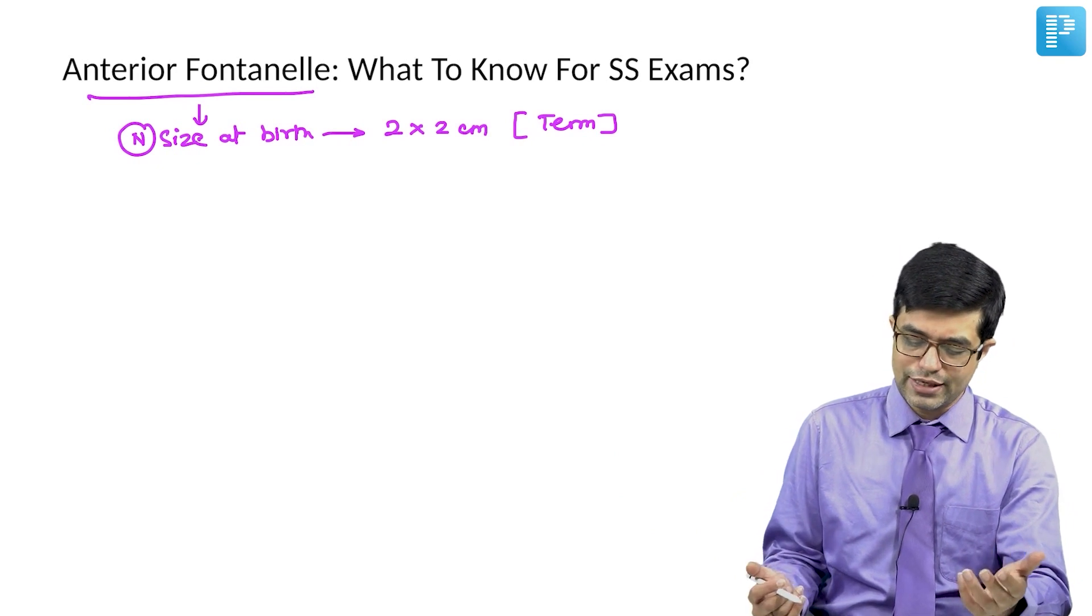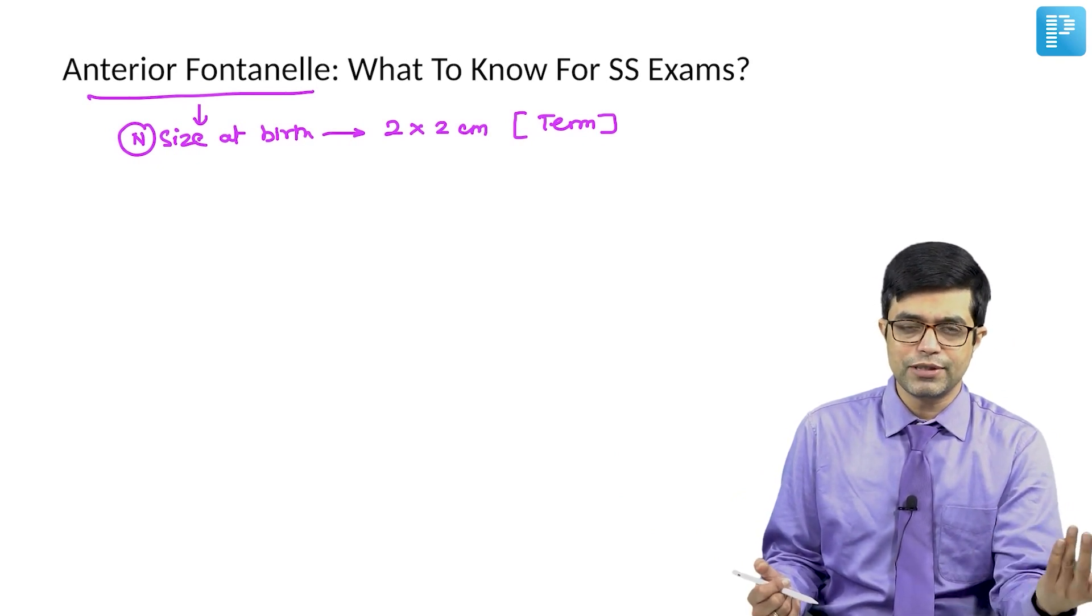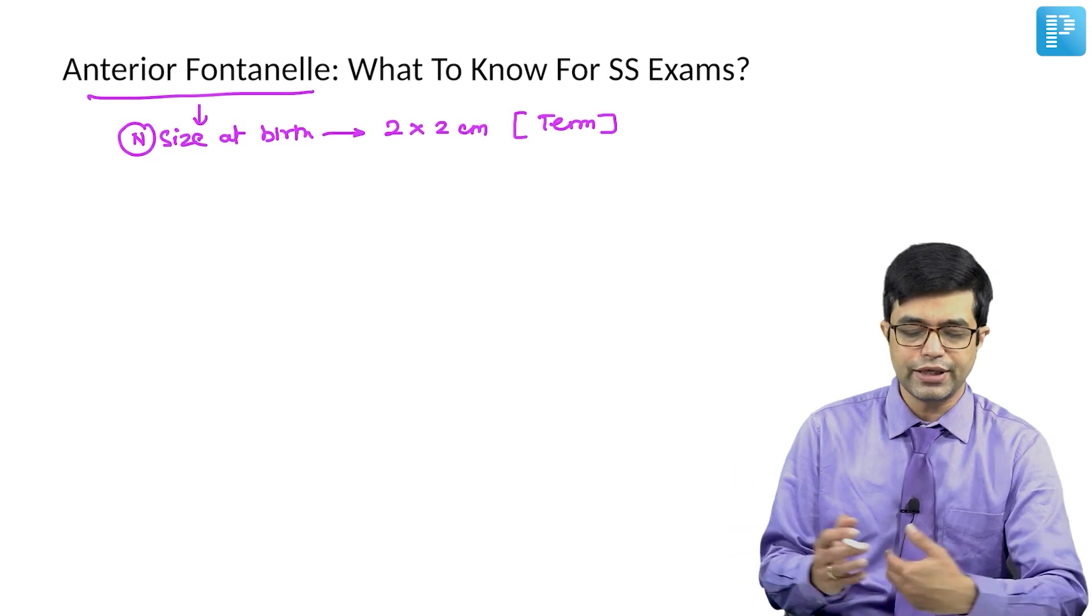In a normal anterior fontanel, some books say 2.5 to 2.5, some say 2 by 2, Nelson says 2 by 2, so we are taking 2 by 2.